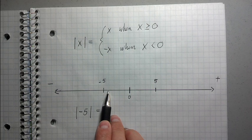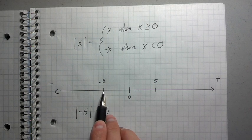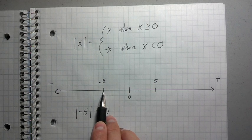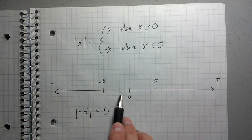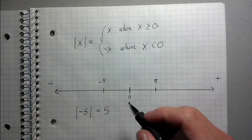because negative 5 is 1, 2, 3, 4, 5 steps away from 0. I would have to walk 5 steps in order to get back to 0 if I started at negative 5. Okay,